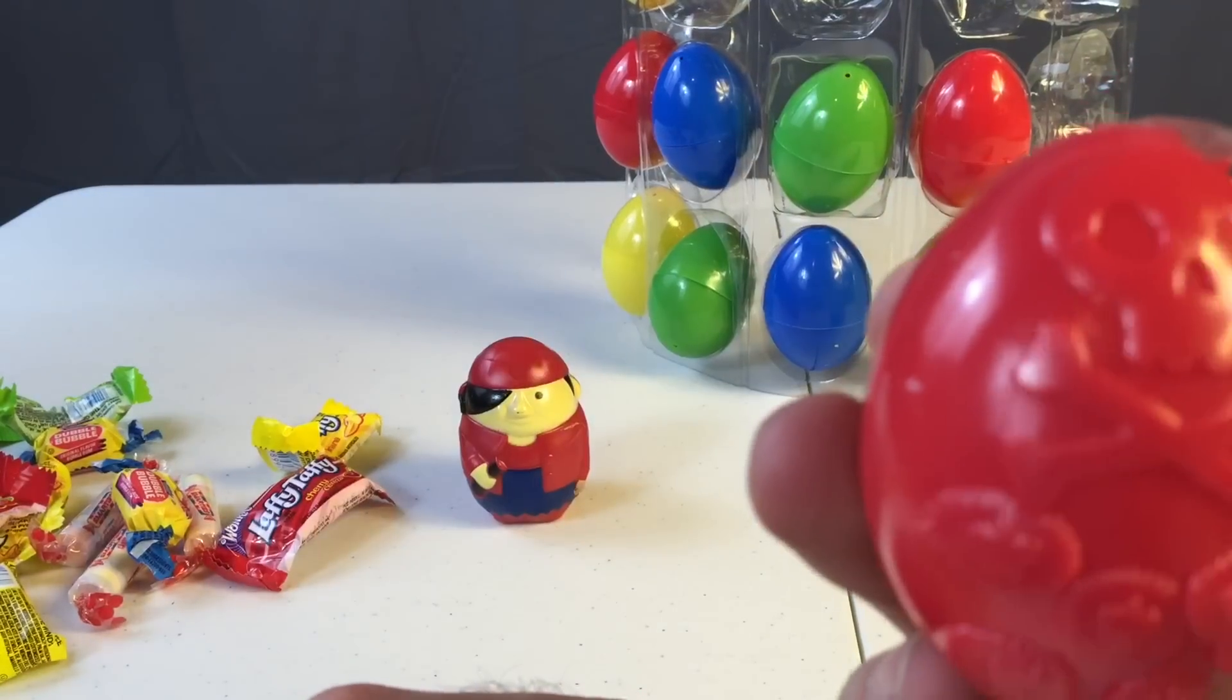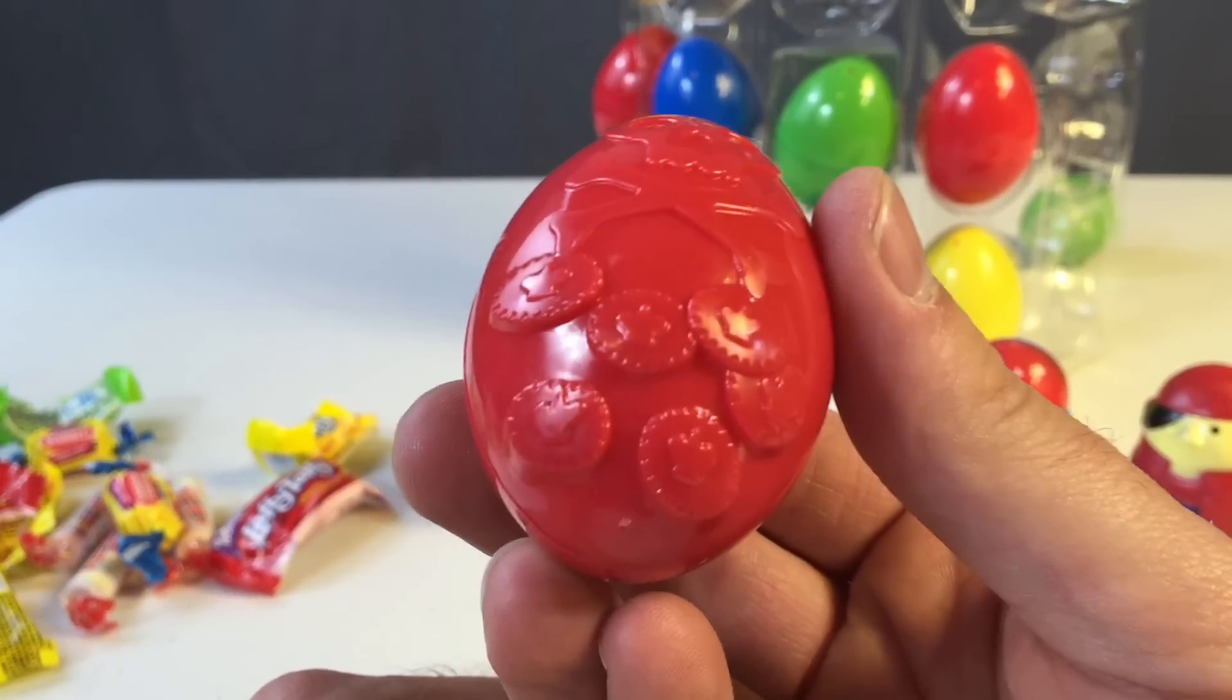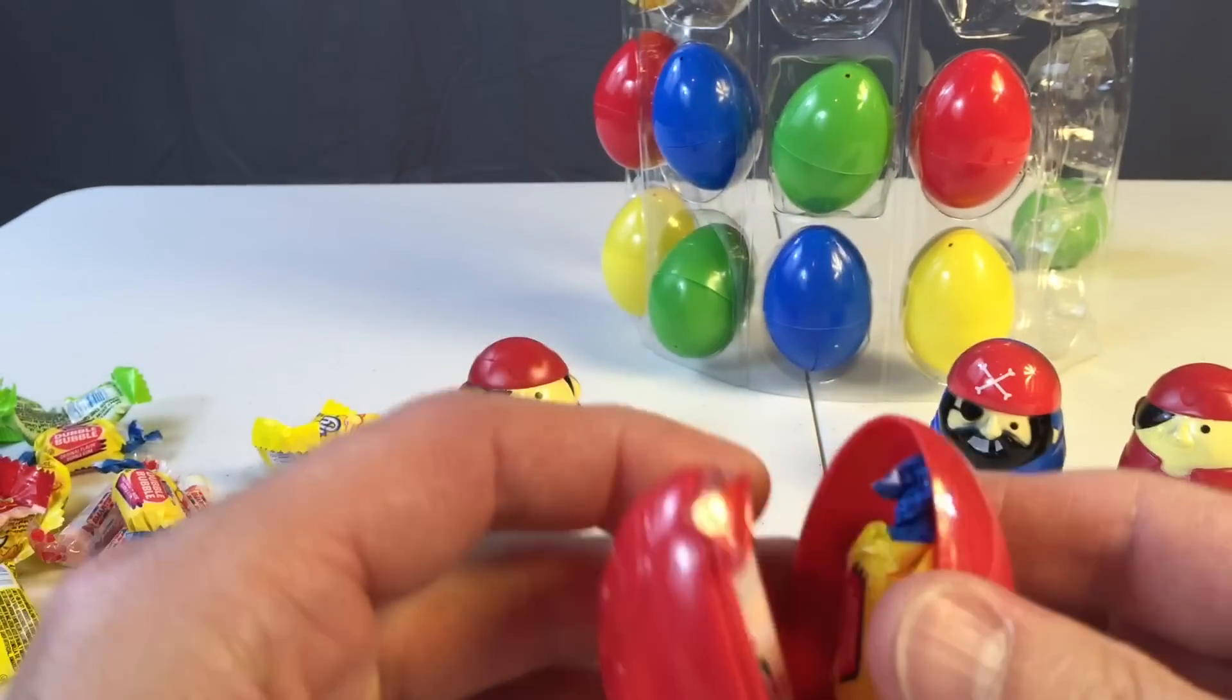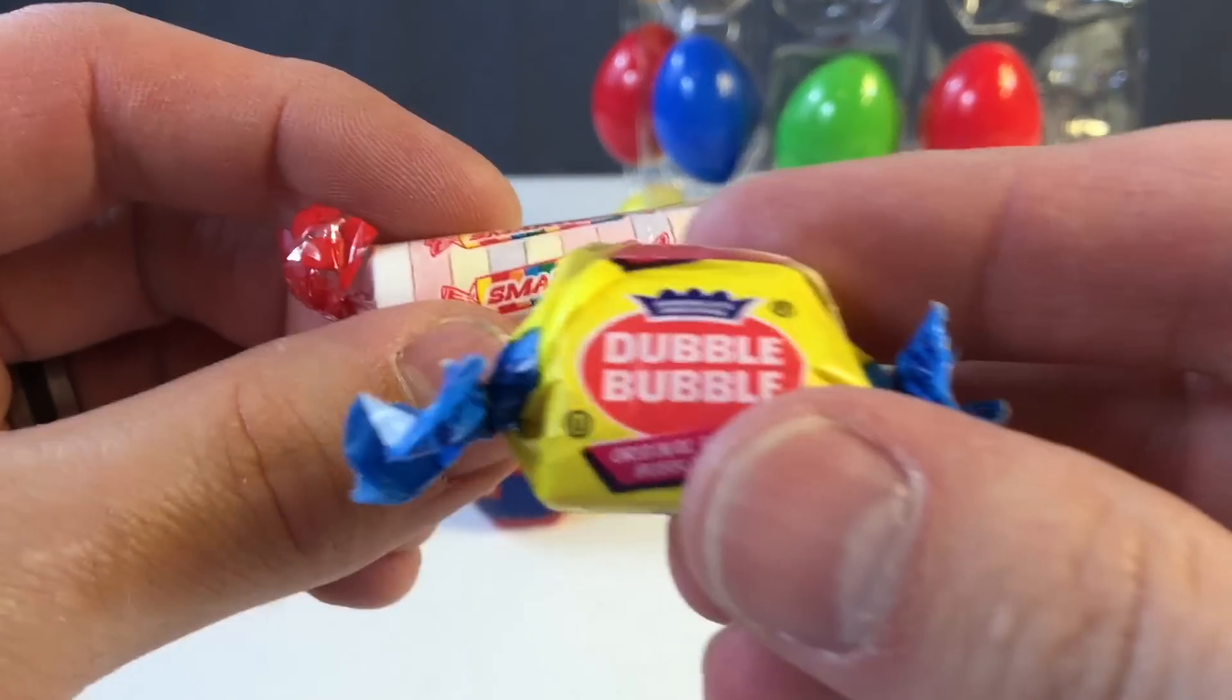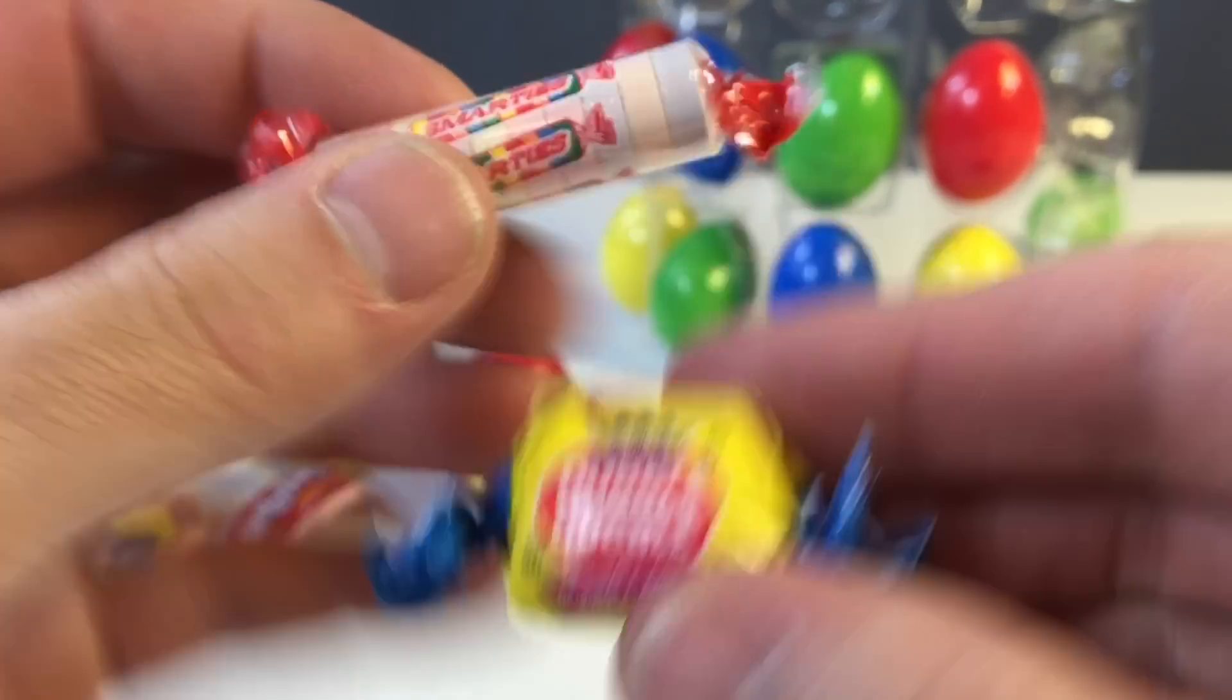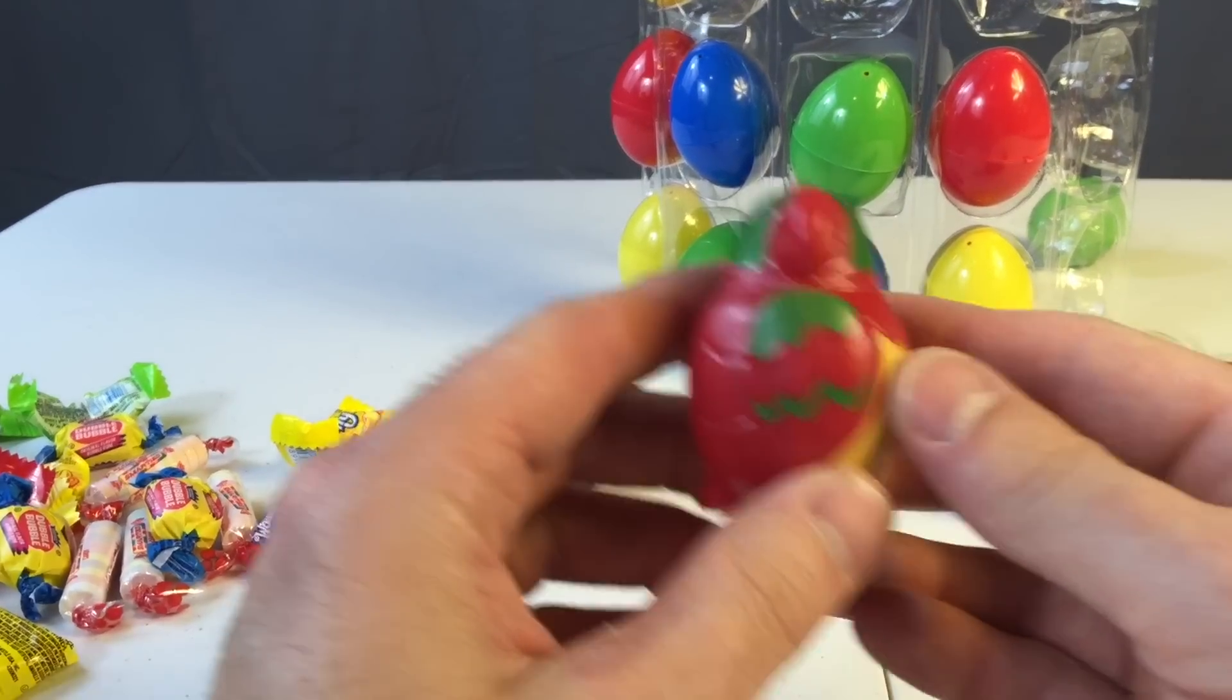Oh, look at this one. Skull and crossbones with treasure. Smarties and Double Bubble. How about the other parrot?